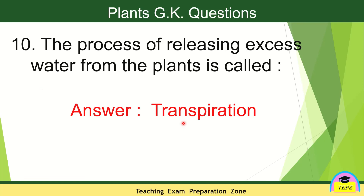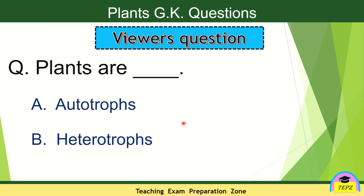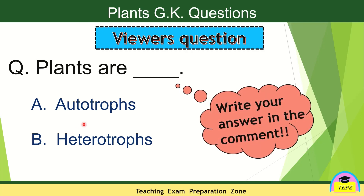We are done with 10 questions in today's video. Now it's your turn to answer — it's time for the viewers' question. Plants are what? Two options: autotrophs, meaning they make their own food and do not depend on others; or heterotrophs, meaning they depend on others for their food. Think about it and write your correct answer in the comments below.